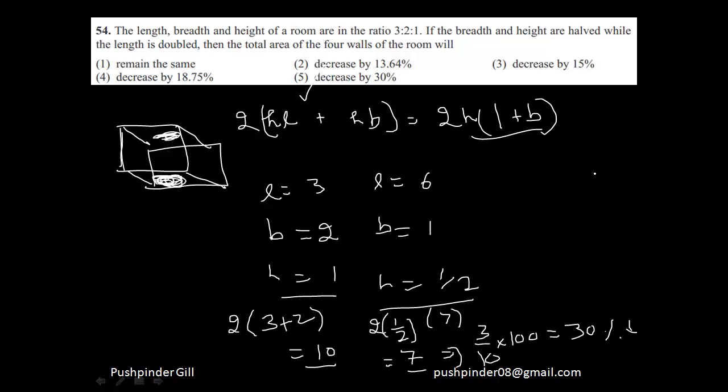I assume this question was pretty easy. The length, breadth and height of the room are in 3:2:1. The only thing tricky was that he considered the four walls of the room. You should not be considering all the walls, just these four walls. The four walls does not include the base and the floor, it just includes all the walls that include height. So this is what it came out to be and we just went with the question and found out what's the percent decrease.